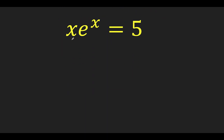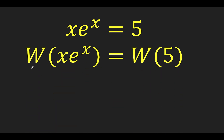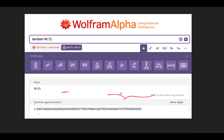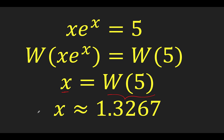Connecting with our problem today: when we have the form x times e raised to x equals 5, in order to find the value of x, we use another tool — the Lambert W function. We take the Lambert W of both sides. The Lambert W has the property that when you have a number times e raised to that same number, it simplifies to just x. The right side, Lambert W of 5, is a constant we can compute using Wolfram Alpha — approximately 1.3267.